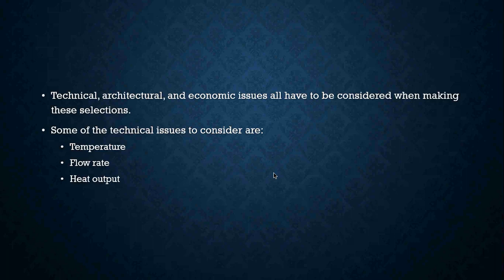Some technical issues we deal with include temperature rise we're trying to achieve. For example, with hot water or domestic hot water heating, you have to deal with flow rates. We don't want the water going too fast in the pipes because that creates noise and other issues that can be a nuisance to the homeowner. We also have to ensure the baseboards are sized correctly to put out the correct amount of heat to the space to create a comfortable environment.